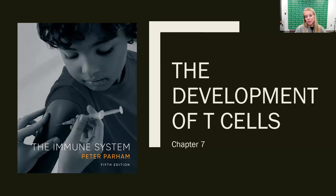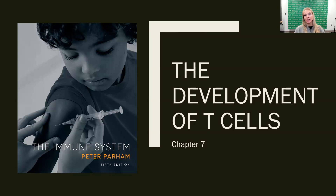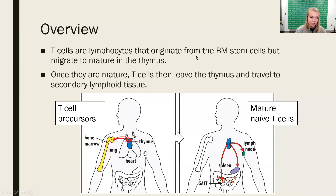In Chapter 7, we're going to shift our focus back to T cells. We looked at how T cells recognize antigen in Chapter 5, but now let's take a deeper look at how they develop those antigen receptors. Let's start with an overview of what's going to be in this set of lectures.